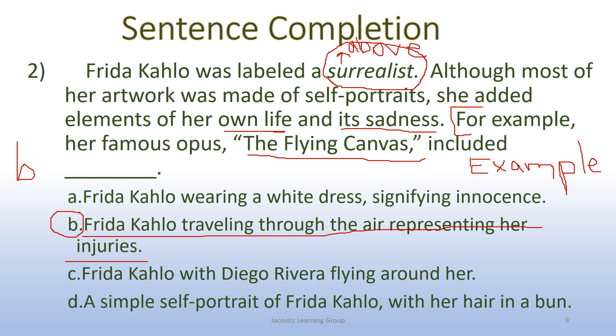She was wearing a white dress signifying innocence, maybe. Traveling through the air representing her injuries, maybe. Frida Kahlo with Diego Rivera flying around her, maybe. And a simple self-portrait of Frida Kahlo with her hair in a bun. Those were called self-portraits. So go ahead and take D out. Frida Kahlo wearing a white dress signifying innocence would just be a simple self-portrait. So this is something that we want to tie back to these words here, her own life and its sadness. So we want to get into what would make Frida Kahlo sad. Although she and Diego argued a lot, we want to talk about its sadness. And the flying canvas was really about her.